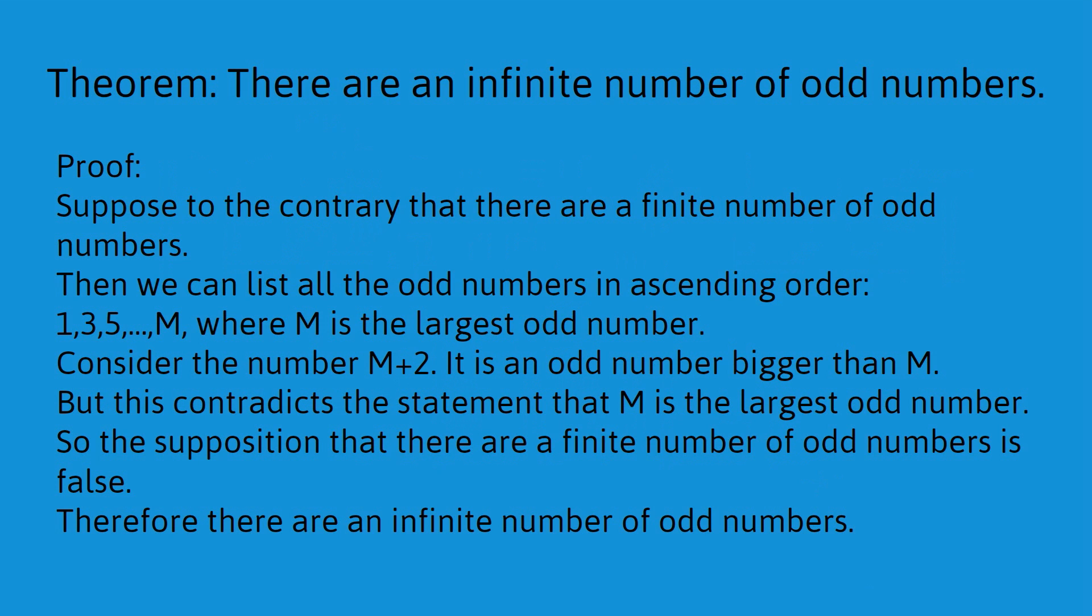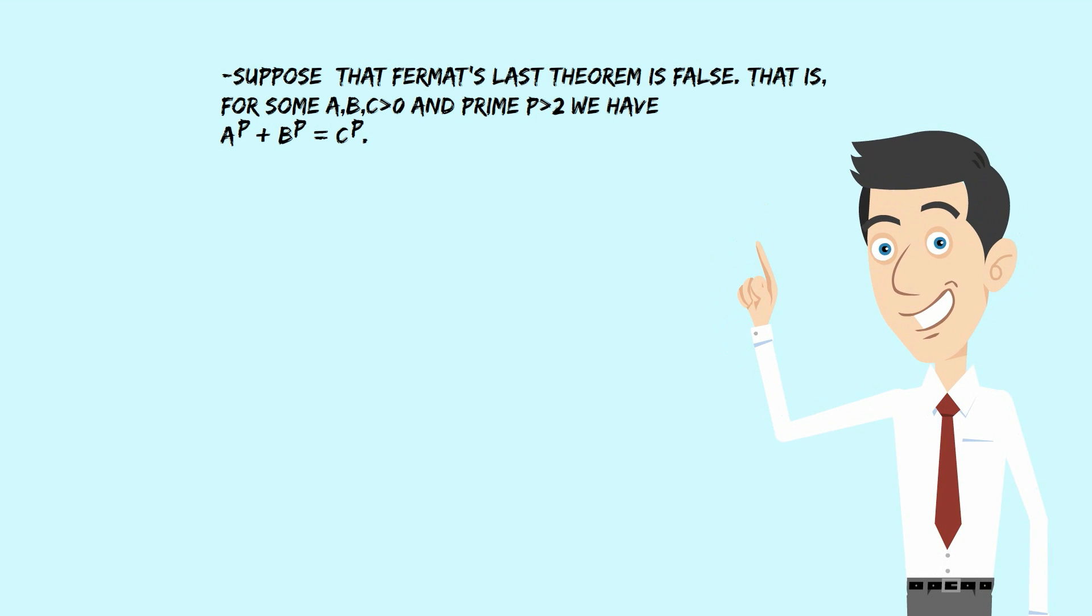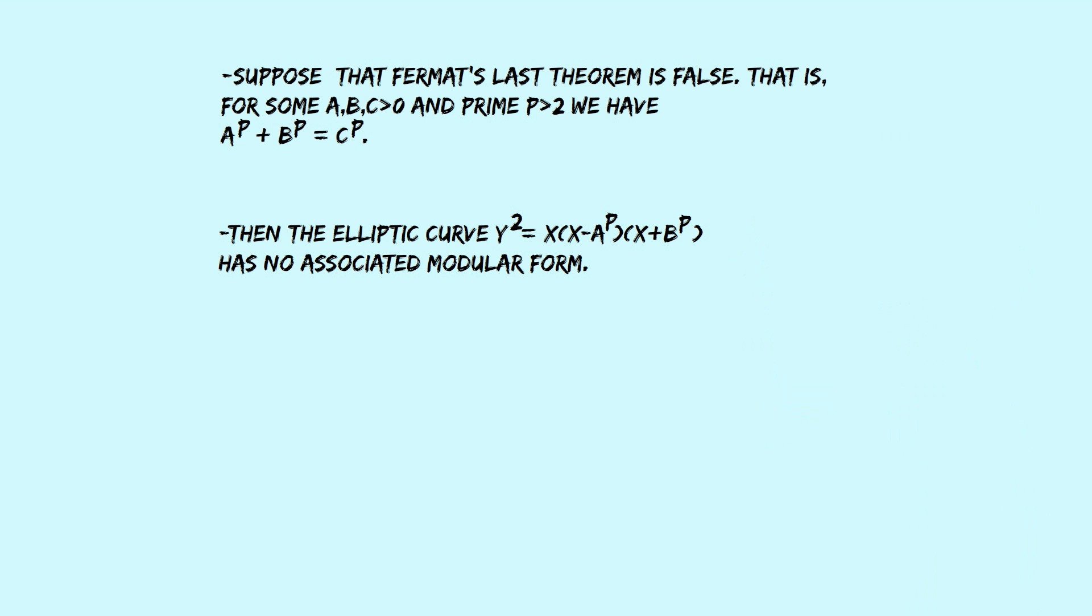Okay, now we're ready for a high-level overview of the proof of Fermat's Last Theorem. We want to prove that Fermat's Last Theorem is true. So, we're going to suppose, to the contrary, that Fermat's Last Theorem is false. That is, for some a, b and c greater than 0 and some prime p greater than 2, we have that a to the p plus b to the p equals c to the p. I mean, that's what it means for Fermat's Last Theorem to be false.